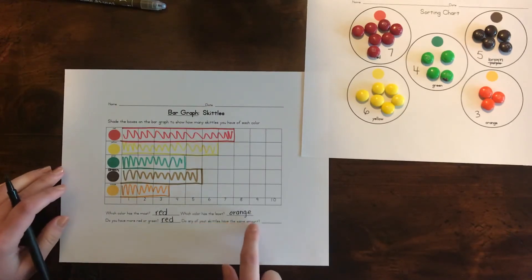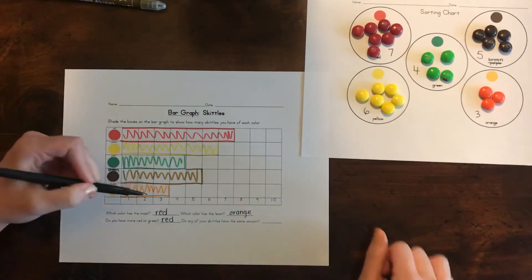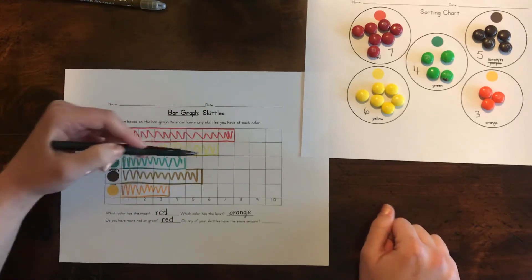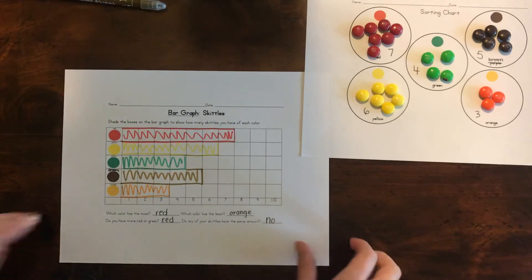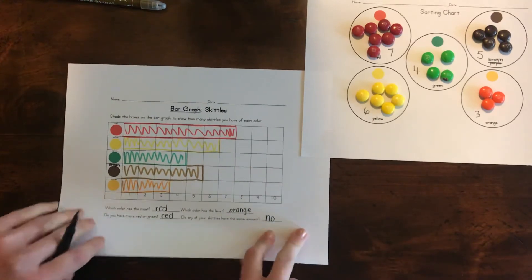Do any of your M&Ms have the same amount? So are any of our bars equal? I don't think so. So that's no. Great. Now we're going to look at our last graph.